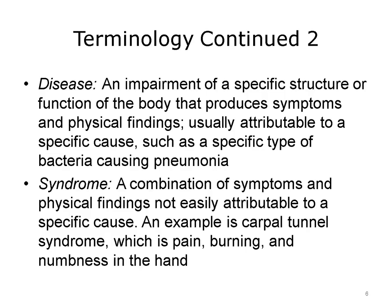A disease is an impairment of a specific structure or function of the body which produces symptoms or physical findings. Symptoms are part of the story patients tell about their illness, including specific complaints such as the location, frequency, and duration of pain. Physical findings are what the physician or other health professional determines by observation and physical examination. For example, a physician may observe swelling in the ankle and determine the area of most tenderness. Diseases usually have a specific cause; for example, bacterial pneumonia is caused by a specific type of bacteria. A syndrome is a combination of symptoms and physical findings not easily attributable to a specific cause. An example is carpal tunnel syndrome, which causes pain, burning, and numbness in the hand.